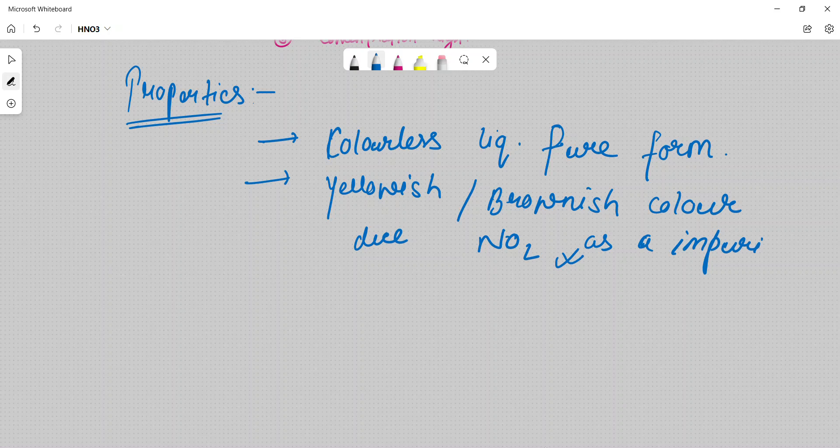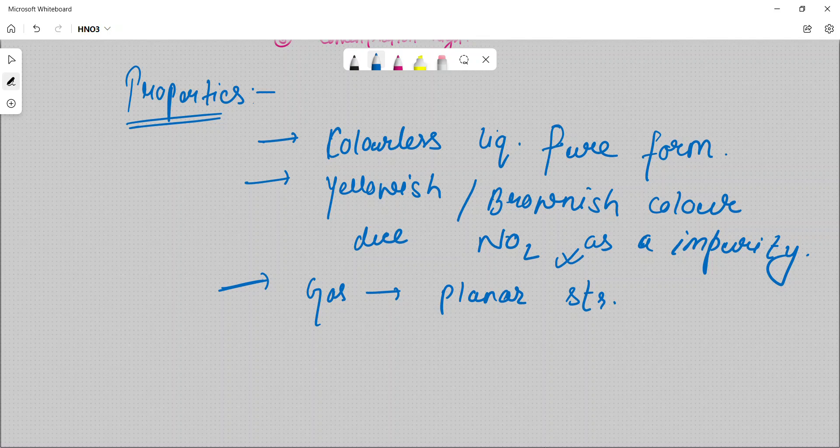From this situation, this is brownish or yellowish color. And in the gaseous state, its structure is planar. In the gaseous state, it is planar structure.